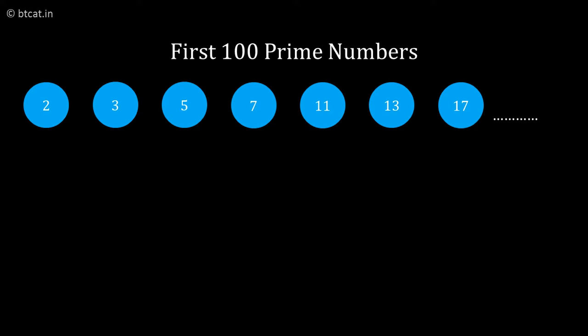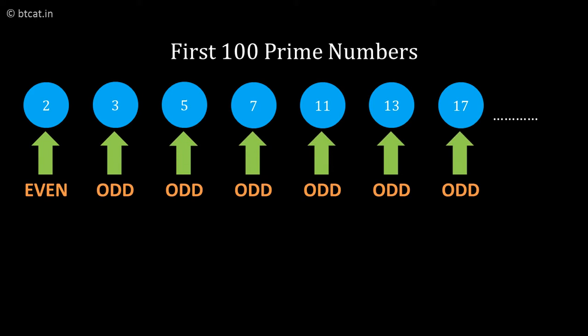If you look at it closely, there is only one prime number which is even, and that number is 2. Apart from 2, all the prime numbers will always be odd numbers, else they would be divisible by 2 and hence they can never be prime.